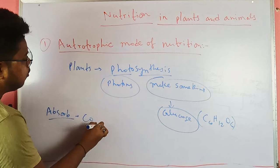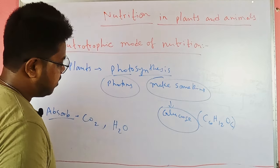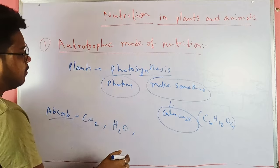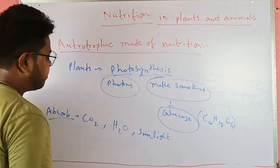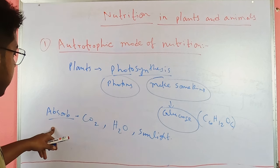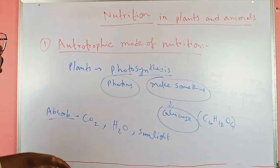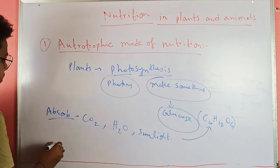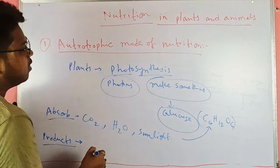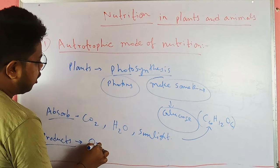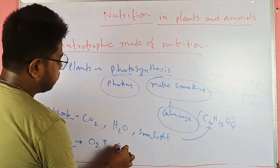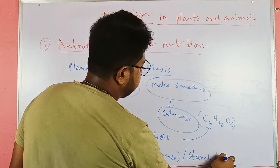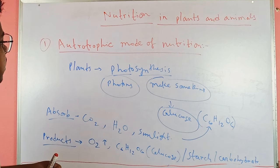During photosynthesis, plants absorb CO2 from nature, water and other essential minerals from the soil through roots, and energy from sunlight. The products are glucose and oxygen, which is evolved into nature. The main product, C6H12O6 or glucose, is also called starch or carbohydrate.